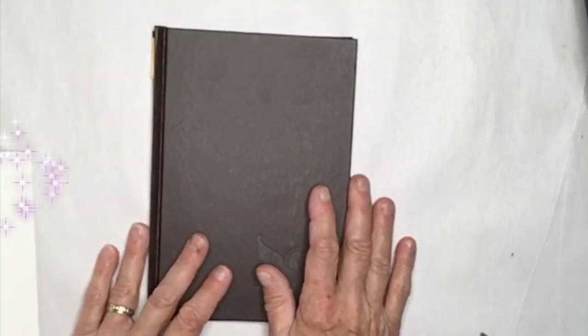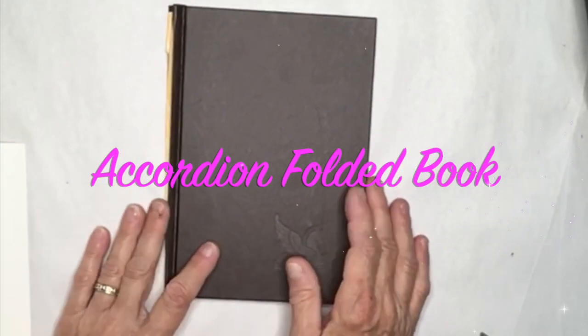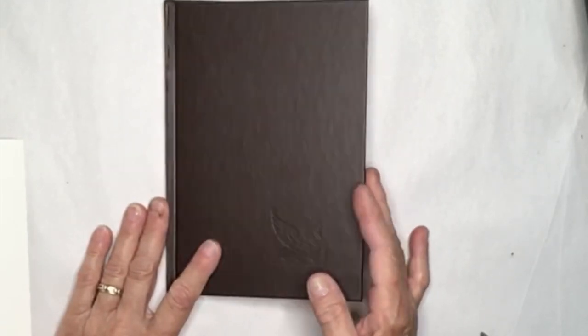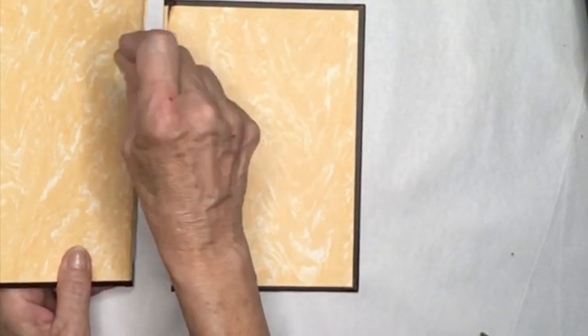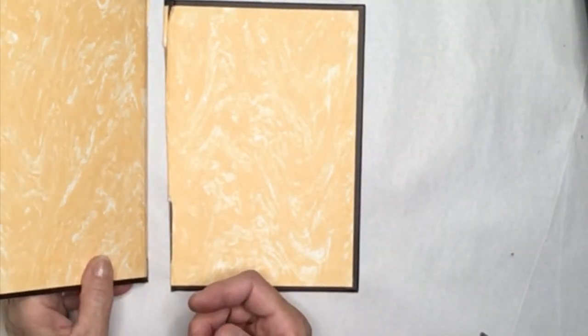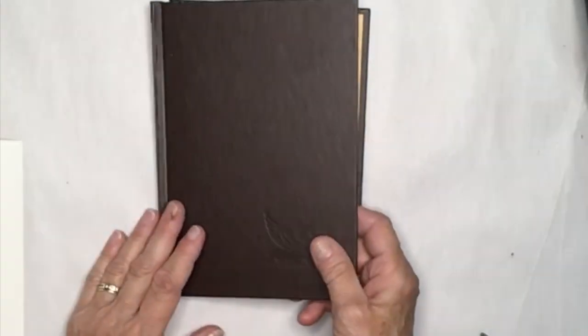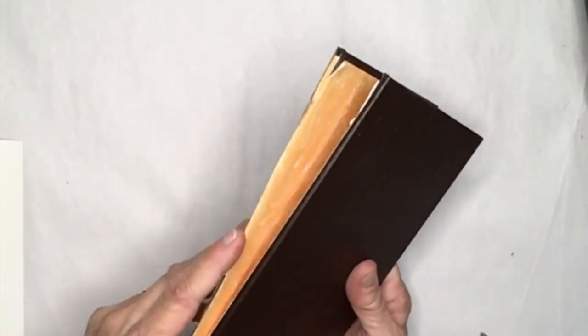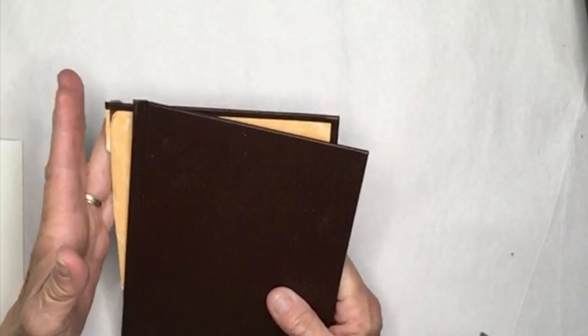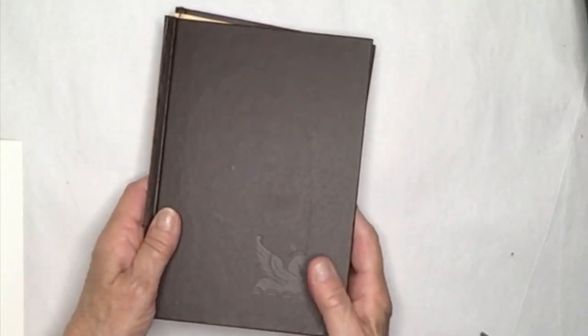We're going to make this accordion folded book. This is a little different from the books I usually do. Instead of binding pages with saddle stitch, I cut the spine out of this old Readers Digest and I'm going to use watercolor paper.